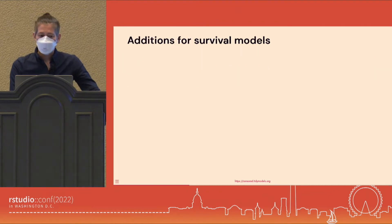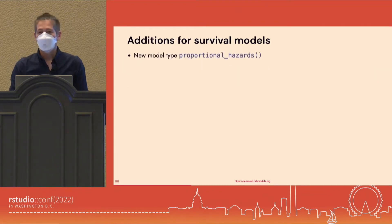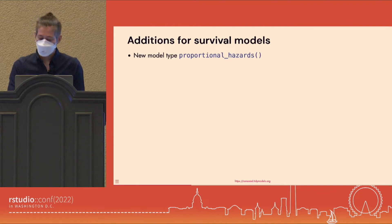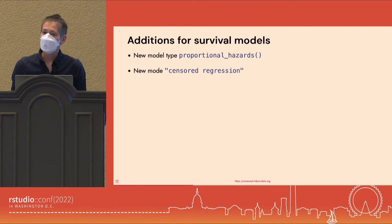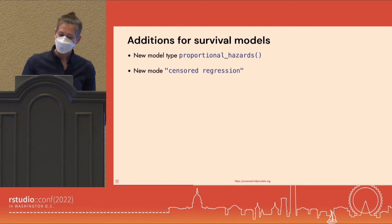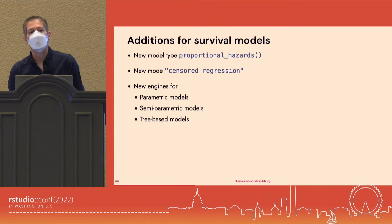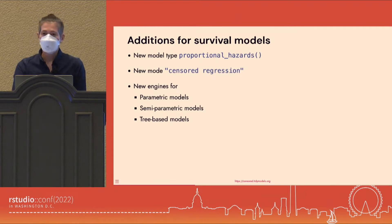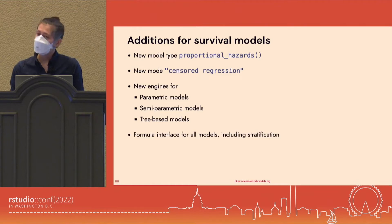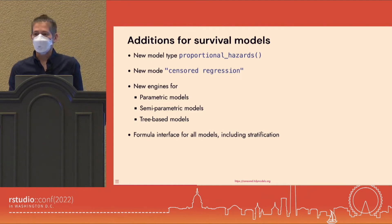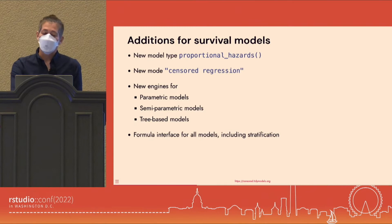So what's actually new with censored? First, we have a new model type called proportional hazards to let you fit the classic Cox model. Second, we have a new mode to distinguish censored regression from regular regression. Third, there are several new engines added to existing models. With that, censored covers parametric models, semi-parametric models, and tree-based models for survival analysis. We also have a formula interface for all of these models — even the glmnet package, which famously does not have one — and that includes a way to specify stratification.